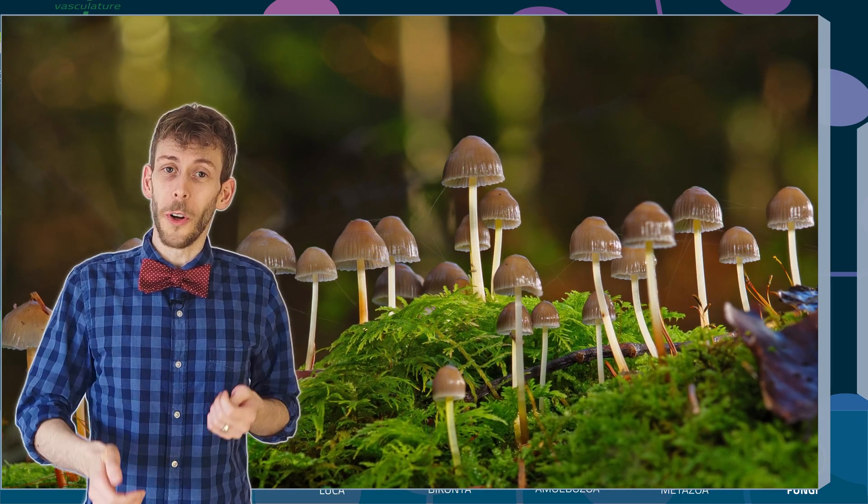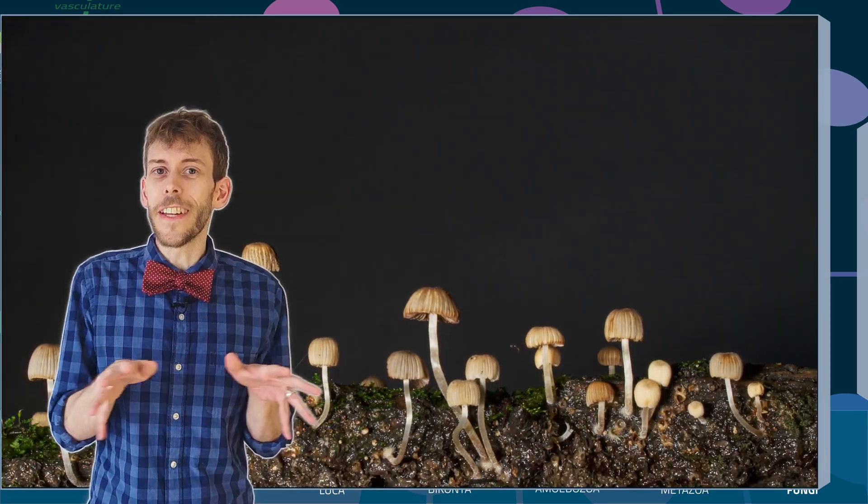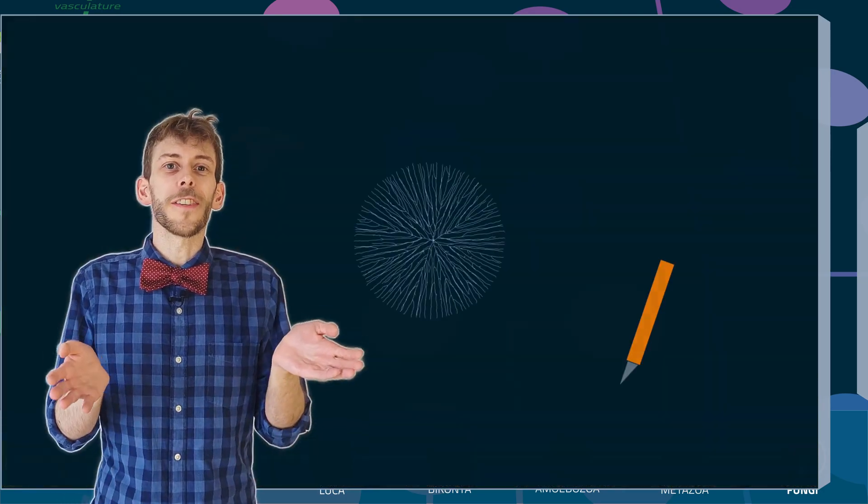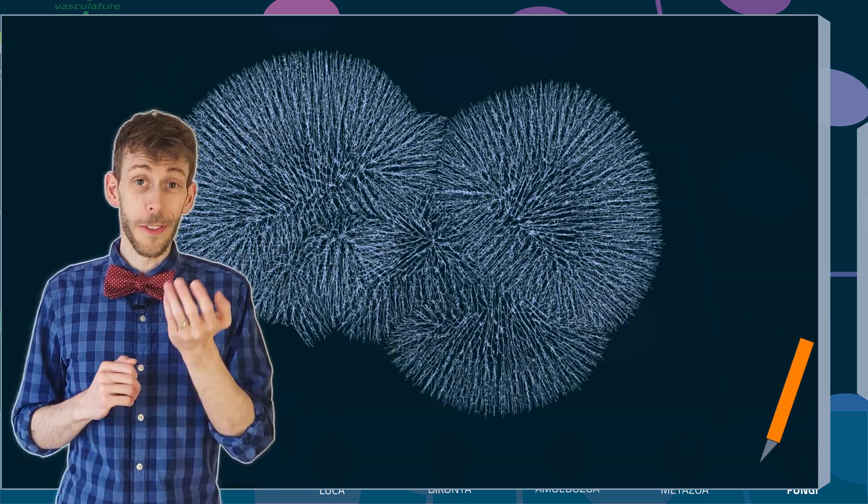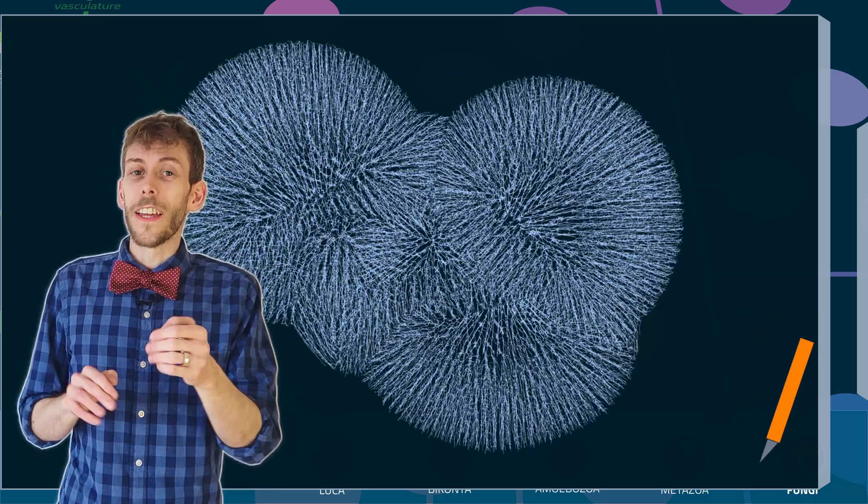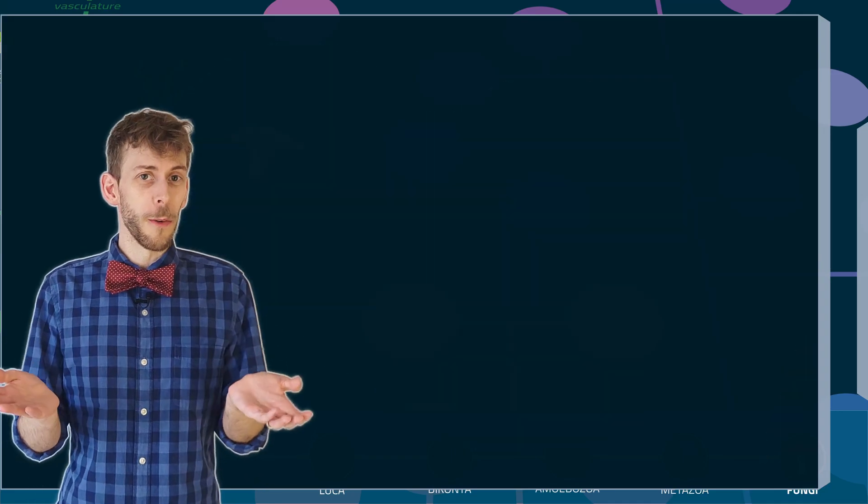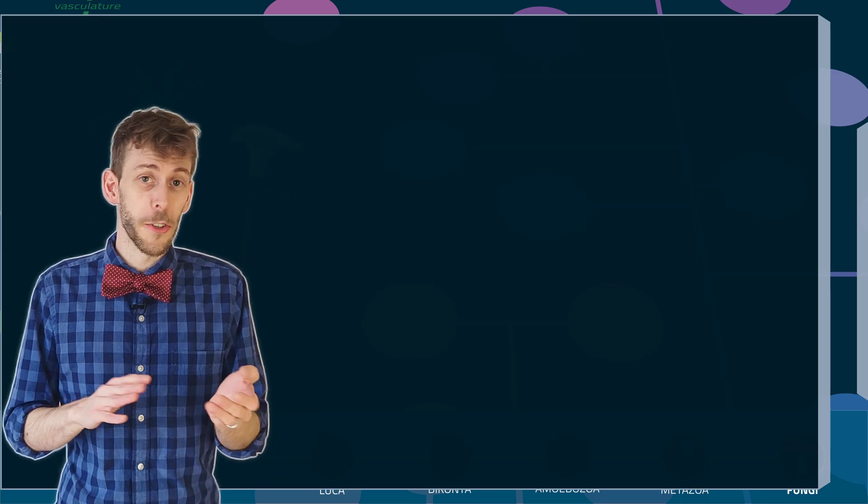However, a fungus doesn't put all the eggs in one basket. It's a decentralized organism. When you eat part of it, and even most of it, it will just grow back. Cut the fungus in 100 pieces and you got 100 fungi. So you see, the animal strategy is not inherently better than the fungus strategy. Both life forms have spread all over the planet and are extremely successful.